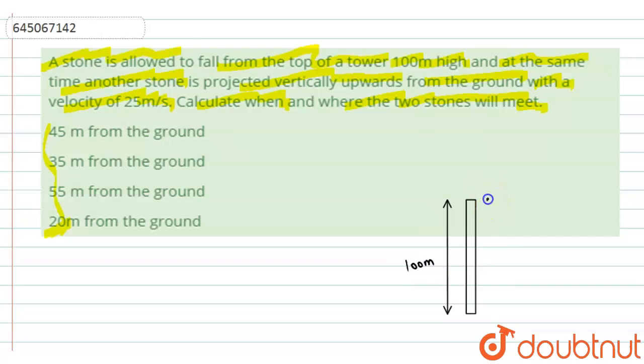Now a stone is dropped from the top of the tower and at the same time a stone is thrown vertically upward from the ground level towards the upward direction with a velocity of 25 meter per second.